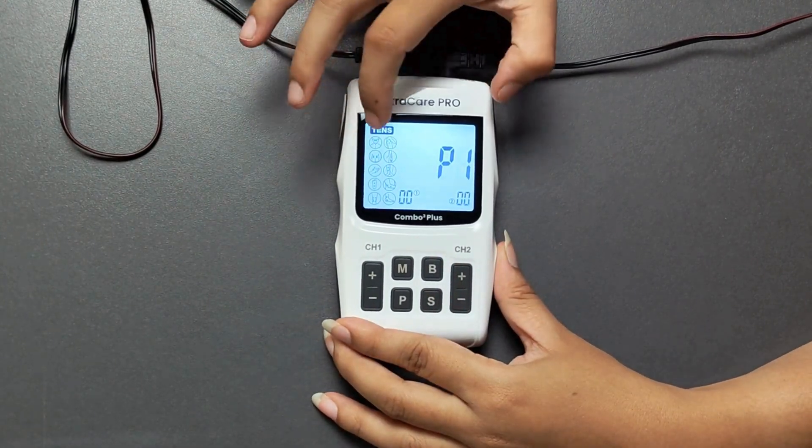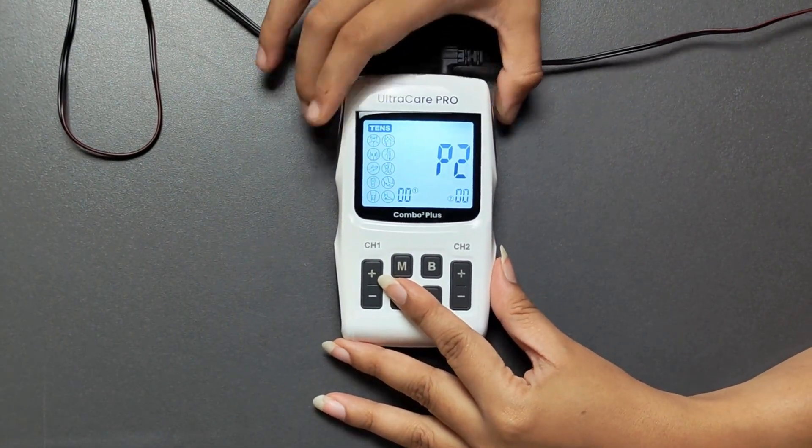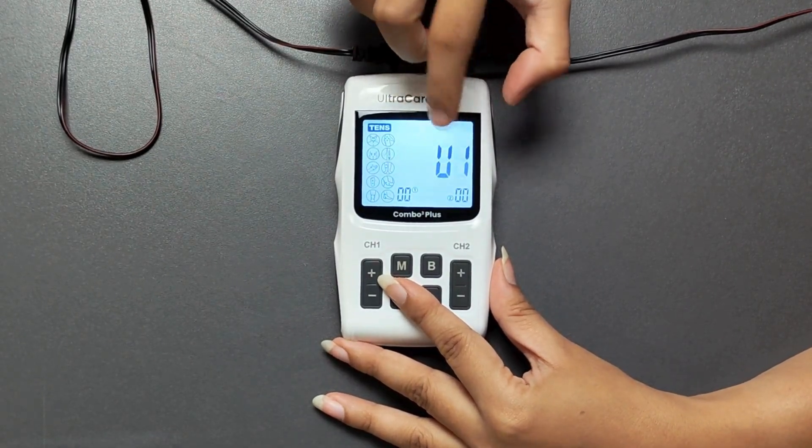Press B to select the desired body part and then press P to switch through the program types until you reach U1 manual mode.